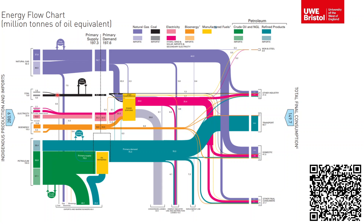You'll also see some interesting trends — the UK is now reducing its dependency on coal, so the thickness of that line has got smaller compared to previous years. The thickness of the line is proportional to the magnitude of the energy. On the left hand side we have our primary sources, and on the right hand side we have our consumption: transport, domestic, industry, iron and steel, and so on.